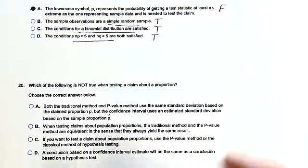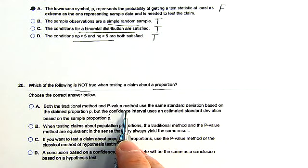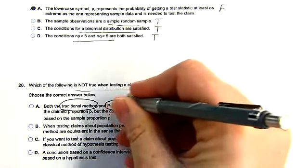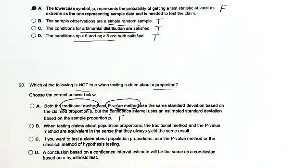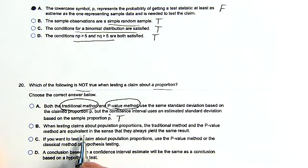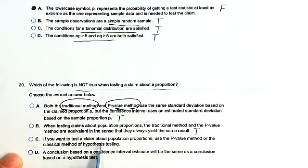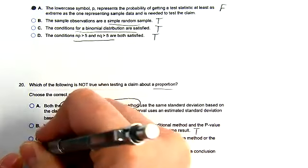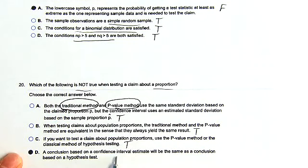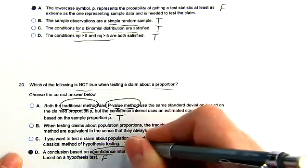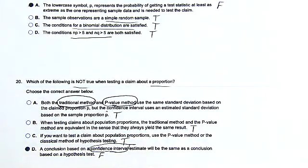Which of the following is not true about testing a claim about a proportion? The p-value method and traditional method are equivalent — true. When testing claims about proportions, both methods are equivalent — also true. All of the first three options say essentially the same thing. The only false one is D: 'A conclusion based on a confidence interval estimate will be the same as a conclusion based on hypothesis testing' — that's false. We haven't taught the confidence interval method yet, but we will. That concludes Section 8.2.